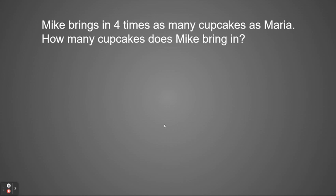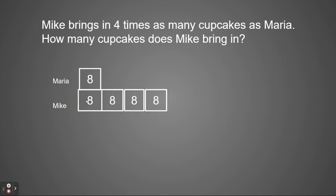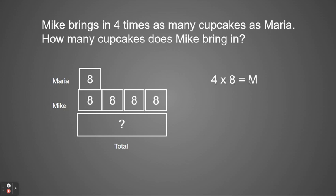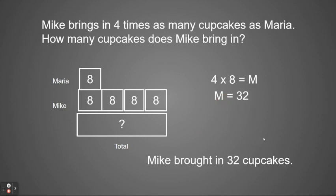Let's look at another example. It says Mike brings in four times as many cupcakes as Maria. How many cupcakes does Mike bring in? We have to think — how many cupcakes did Maria bring in? She brought in eight cupcakes. We know Maria brought eight, and Mike brings in four times as many. If I hear times as many, that tells me I need to multiply. So Mike is going to have four groups of eight, four times as many as Maria. Four times eight is 32, so Mike brought in a total of 32 cupcakes.